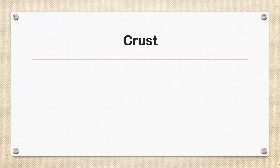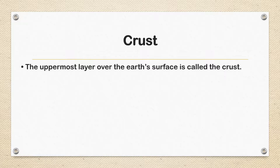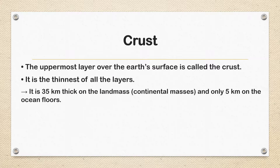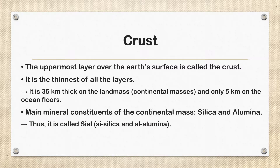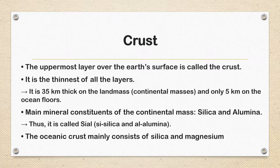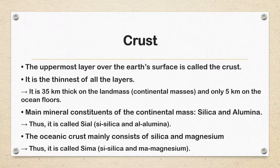Starting with the crust — the uppermost layer over the Earth's surface is called the crust. It is the thinnest of all the layers. It is 35 km thick on the land mass, that is continental masses, and only 5 km on the ocean floors. The main mineral constituents of the continental mass are Silica and Alumina, thus it is called SIAL — Si for Silica and Al for Alumina. The oceanic crust mainly consists of Silica and Magnesium, thus it is called SIMA — Si for Silica and Ma for Magnesium.